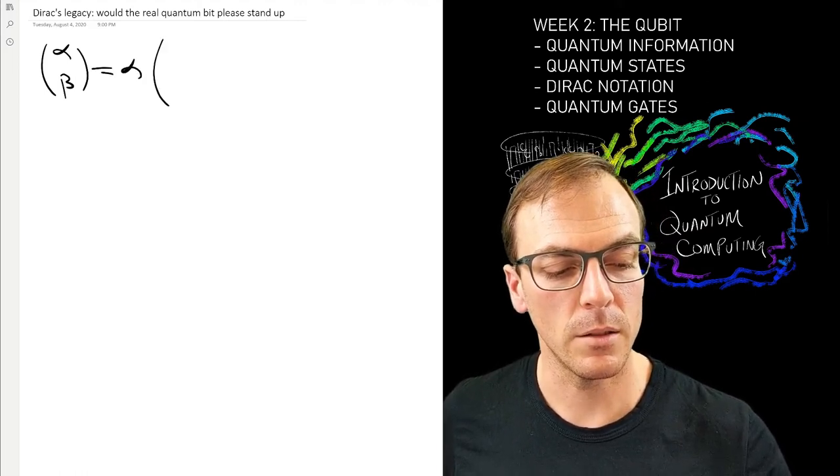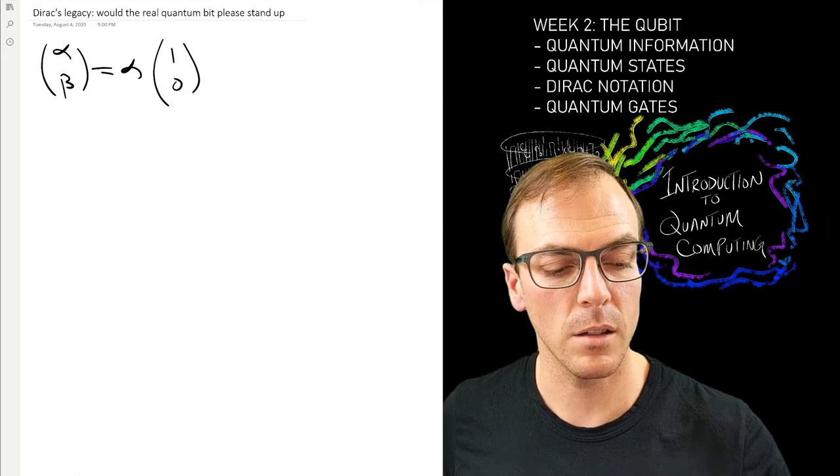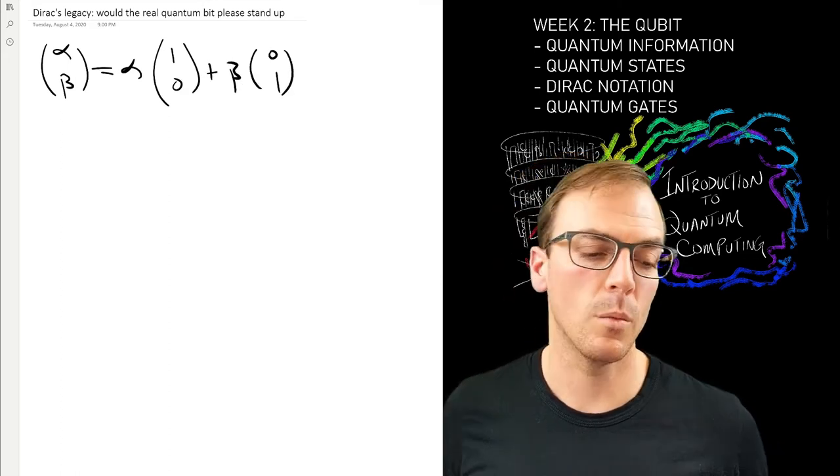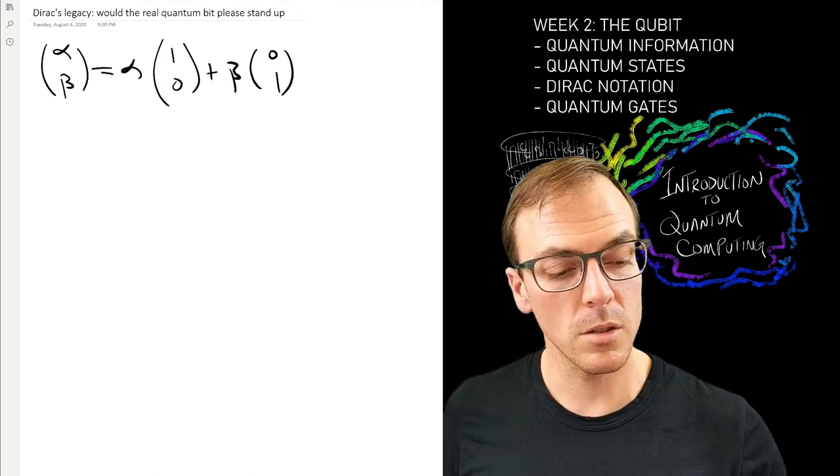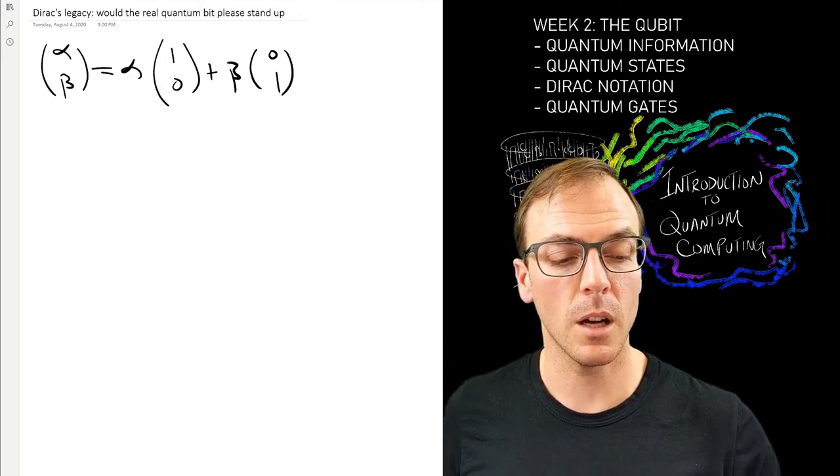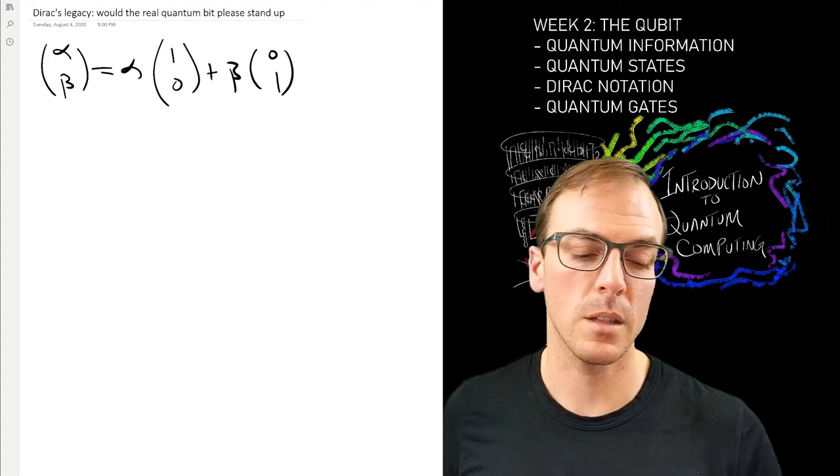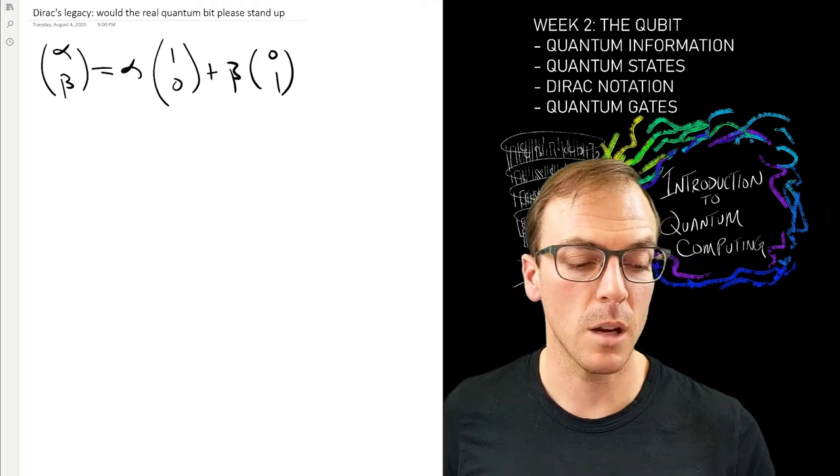So I can expand any vector in what's known as a basis. You can see that if I multiply the alpha times this first vector, I'll get an alpha upstairs. Beta times the second vector, I'll get the beta downstairs, and I put them together I get the original vector.